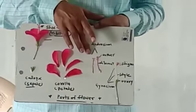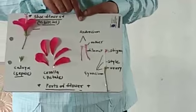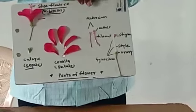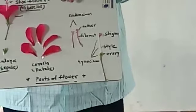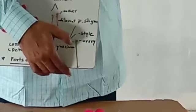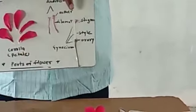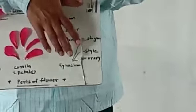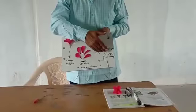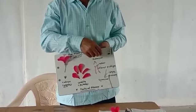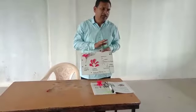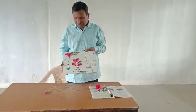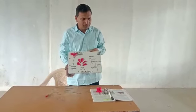The third whorl is an essential whorl called Androecium. Androecium is made up of the Anther and Filament, and it is the male reproductive organ in plants. The last whorl is called Gynoecium. The Gynoecium contains the Stigma at the upper part, the Style, and the Ovary. Together these three make the Gynoecium. Gynoecium and Androecium are essential whorls — they are the only ones taking part in reproduction. This is all the information about the parts of a flower.